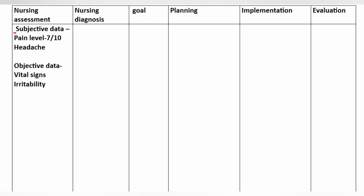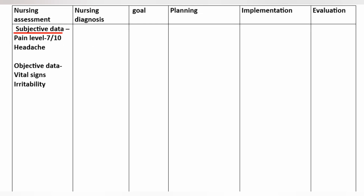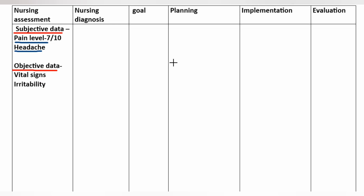Nursing Assessment. Subjective Data: pain level — pain score is 7, headache. Objective Data: vital signs and irritability. Nursing Diagnosis: acute pain related to meningeal irritation.